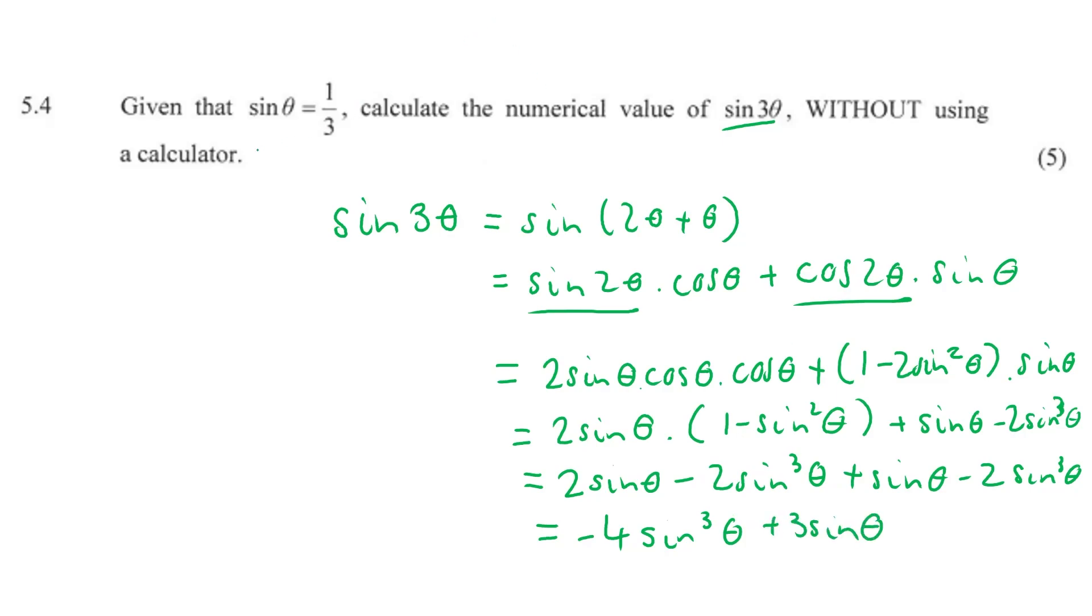Now the beauty of the question is that we know what sine theta is equal to. Sine theta is equal to a third. So this is like part 2 of the question. We've done all the dirty work here on this side of the page. We've gotten our sine thetas. We've eliminated the cosines.